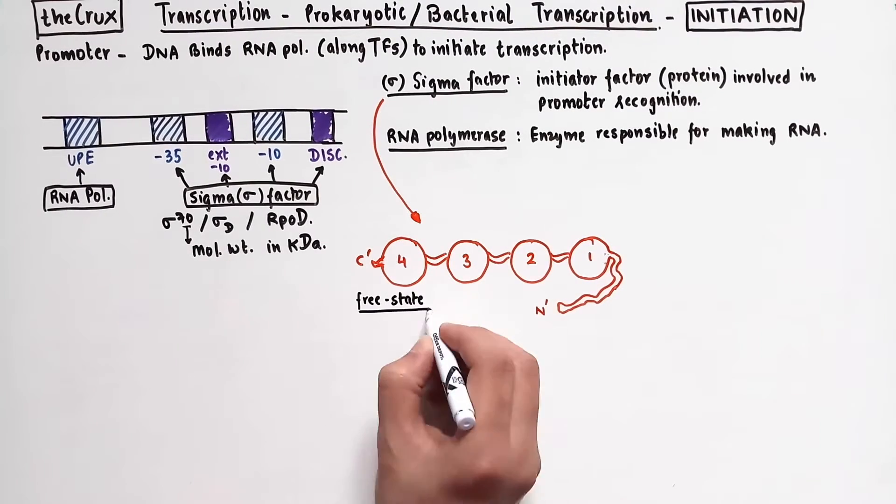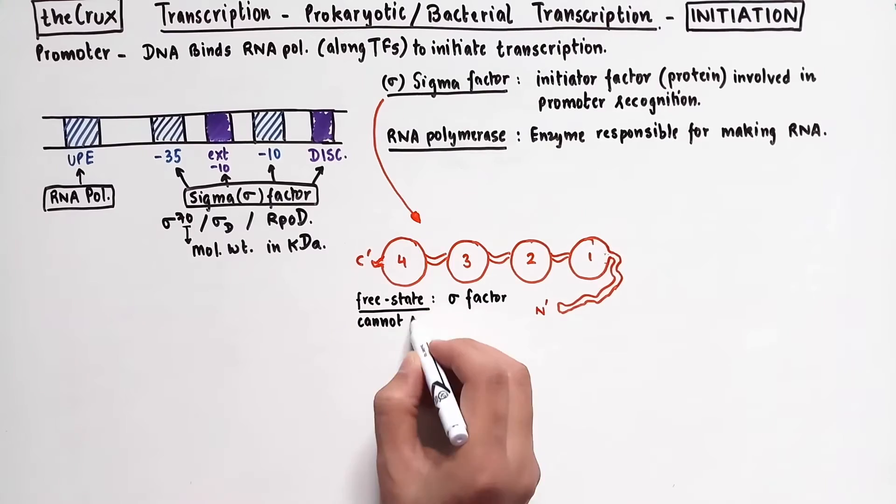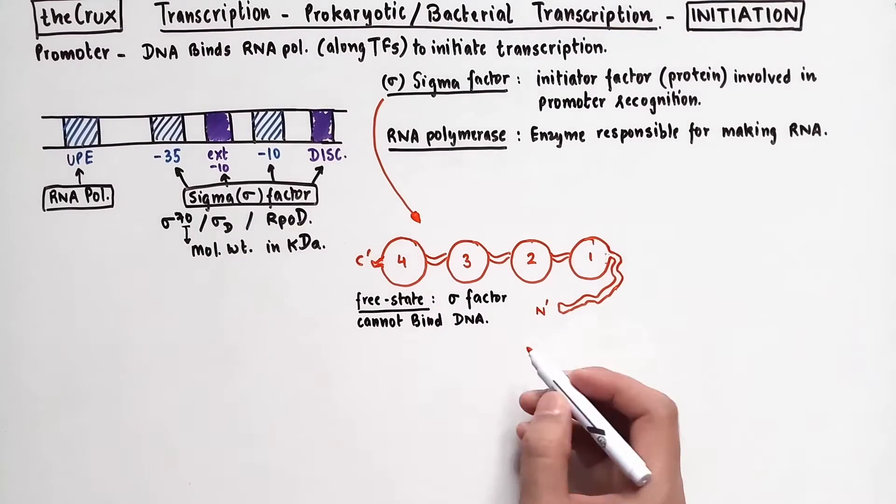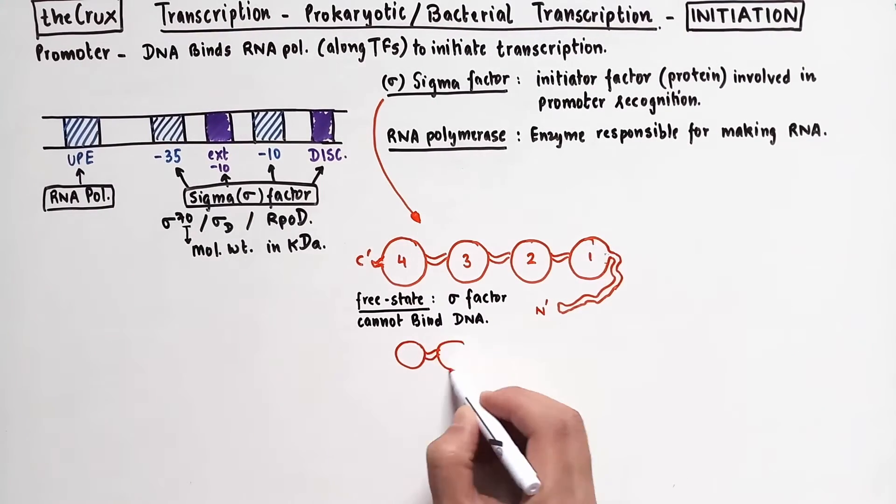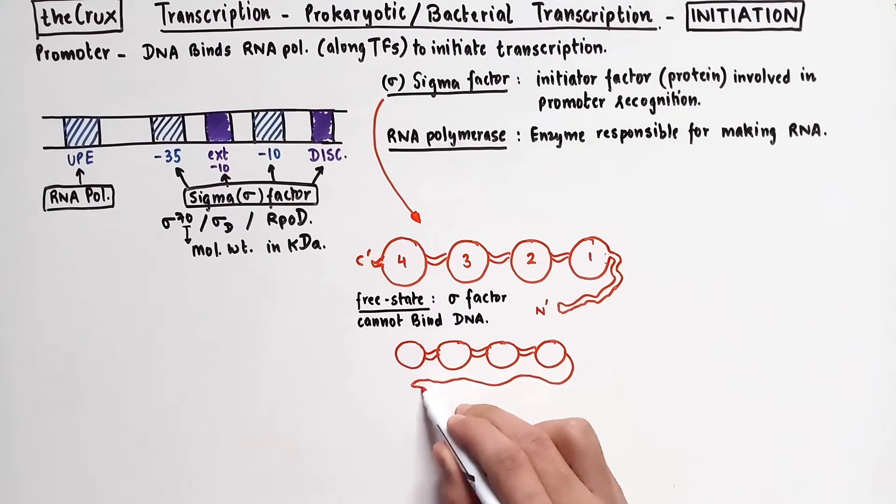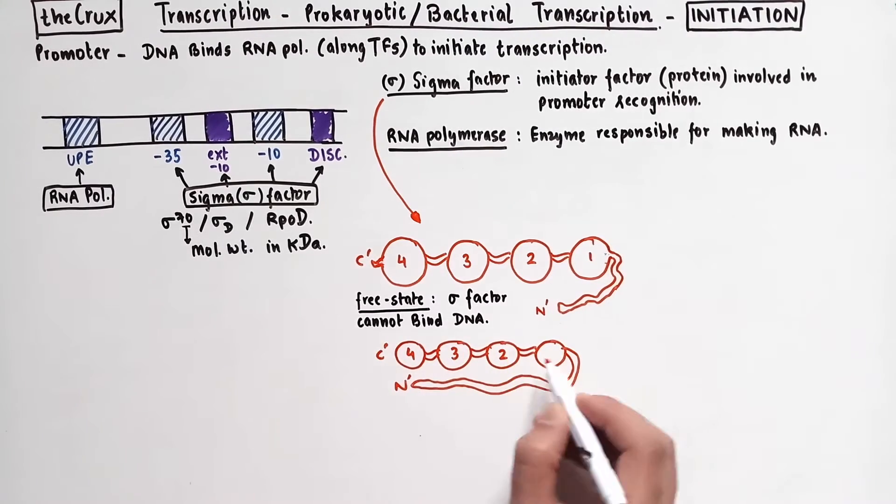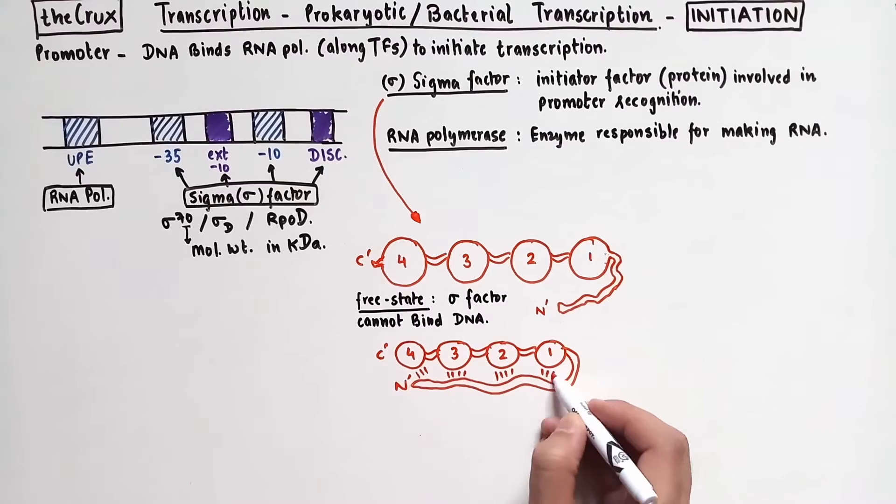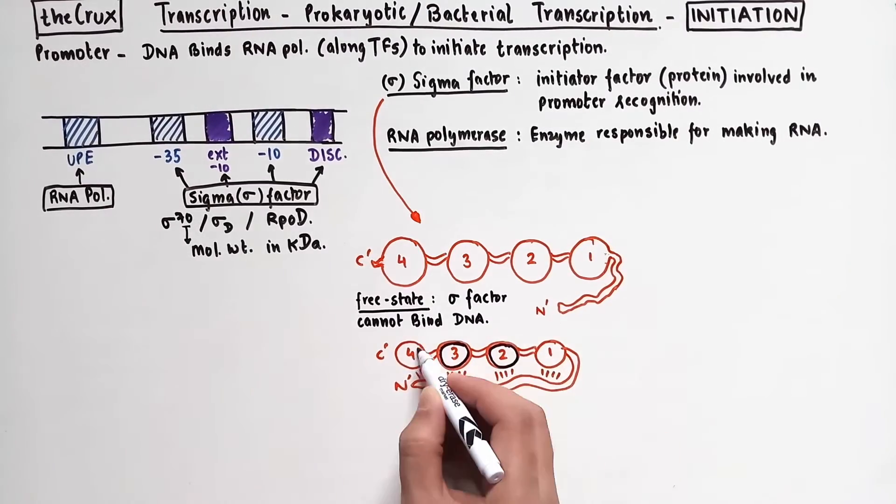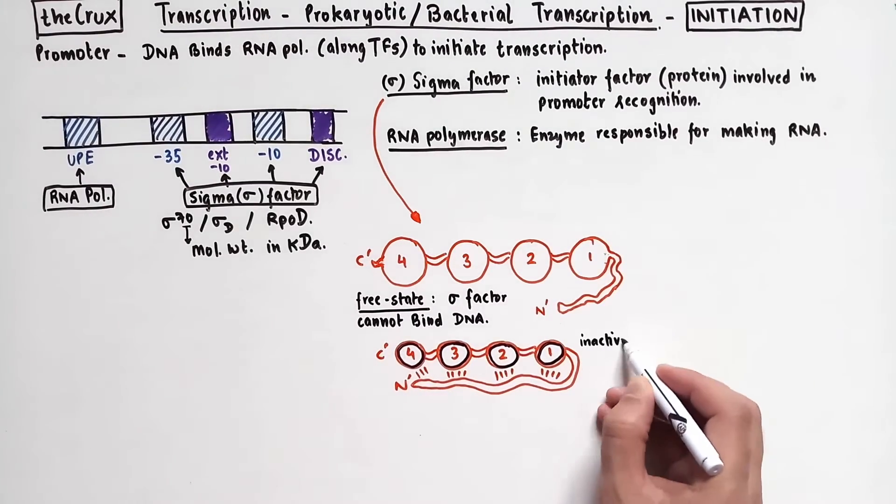Now interestingly, in its free state, sigma factor cannot bind the promoter DNA. And that is because the four DNA binding domains are locked by the N terminus region. Because these DNA binding domains cannot function, the sigma factor is therefore inactive in its free state.